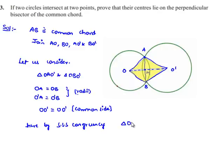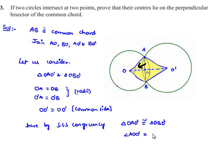That is, triangle OAO' is congruent to triangle OBO'. We know that when two triangles are congruent, their respective corresponding sides and angles can be equated. Therefore, angle AOO' is equal to angle BOO'.